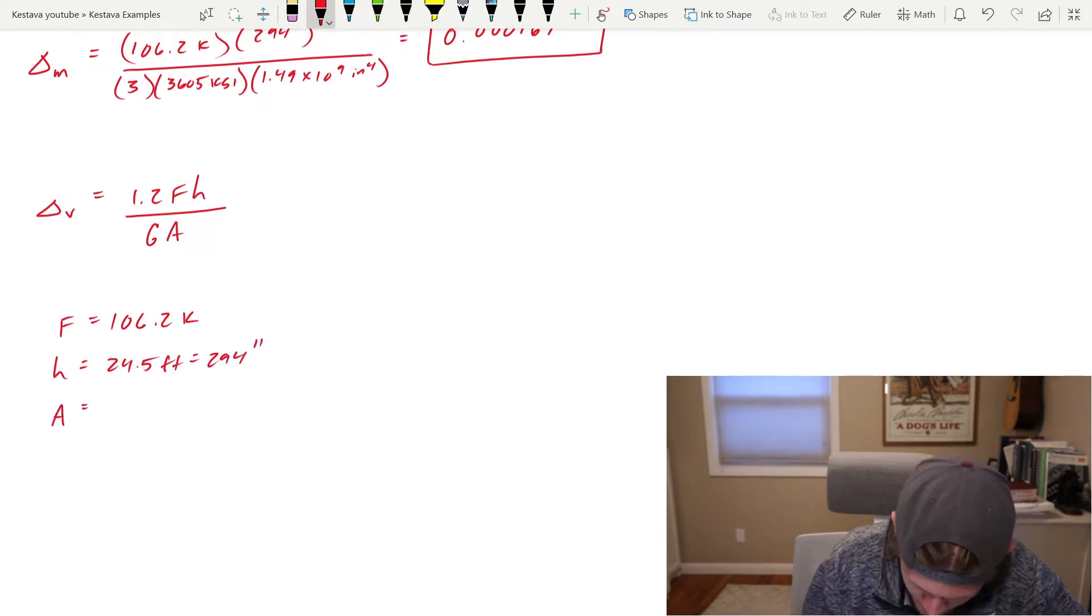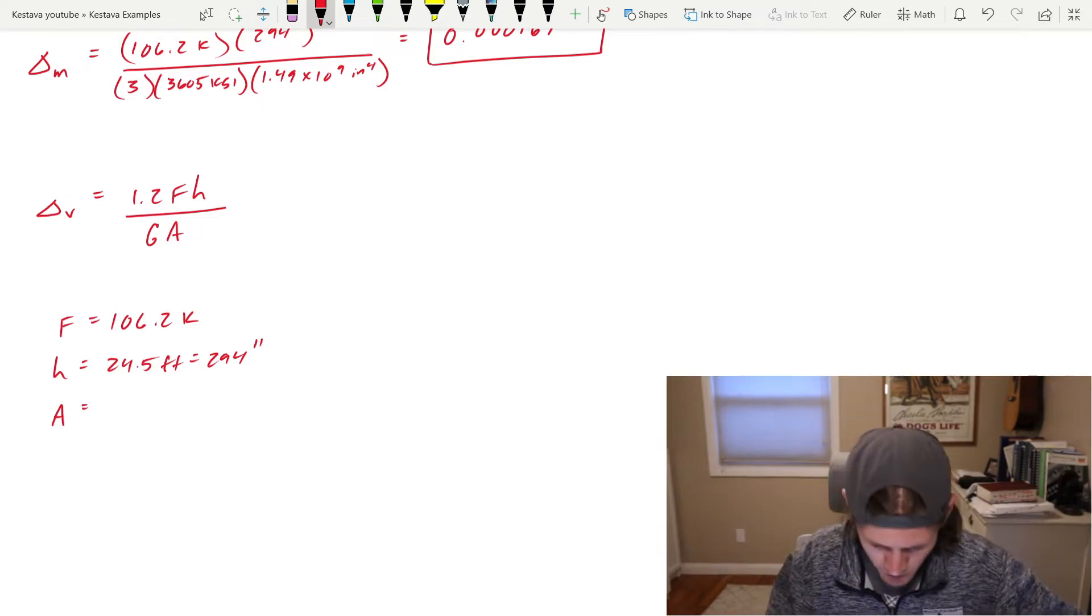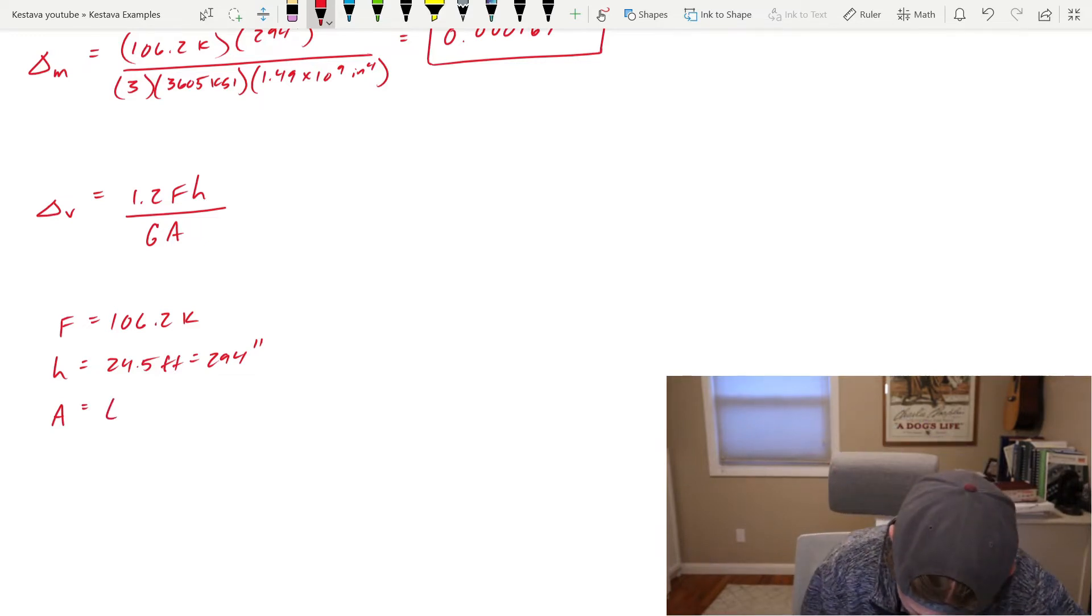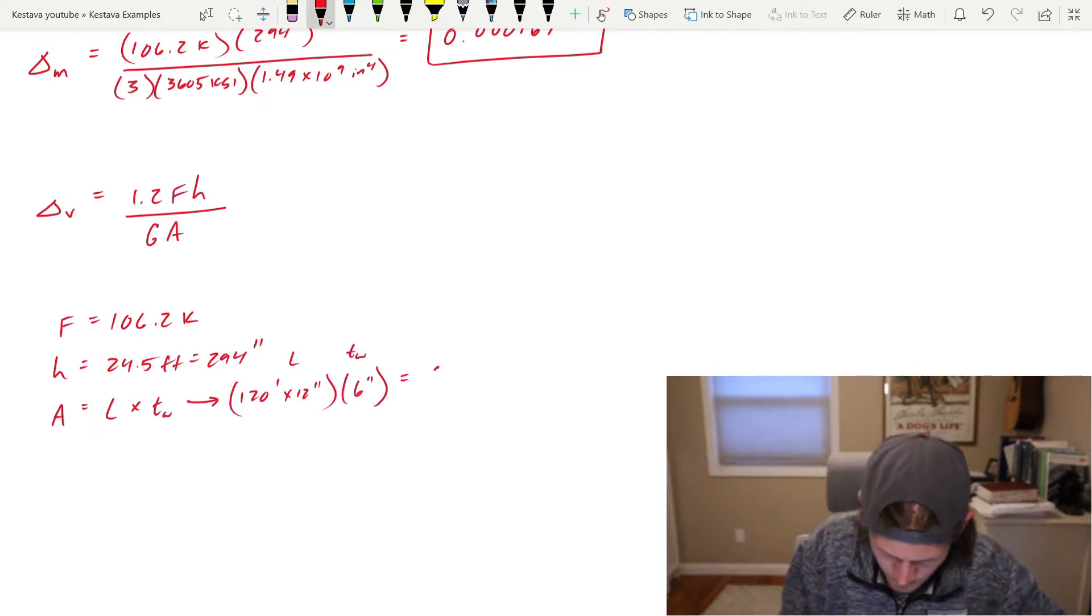A is the area, the cross-sectional area of our shear wall. So that is just length times thickness of wall, which comes to 120 feet times 12 inches times 6 inches for thickness of wall. That's length times thickness of wall, which spits out 8640 inches squared.